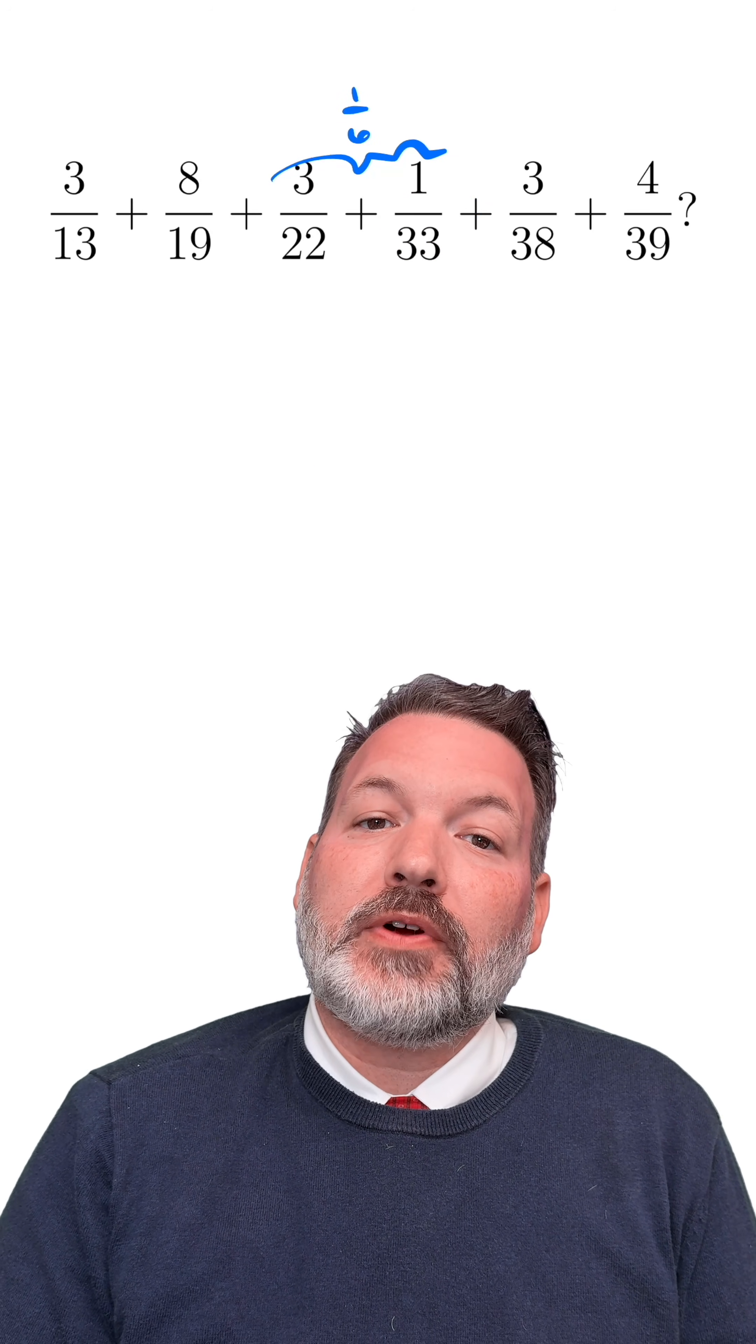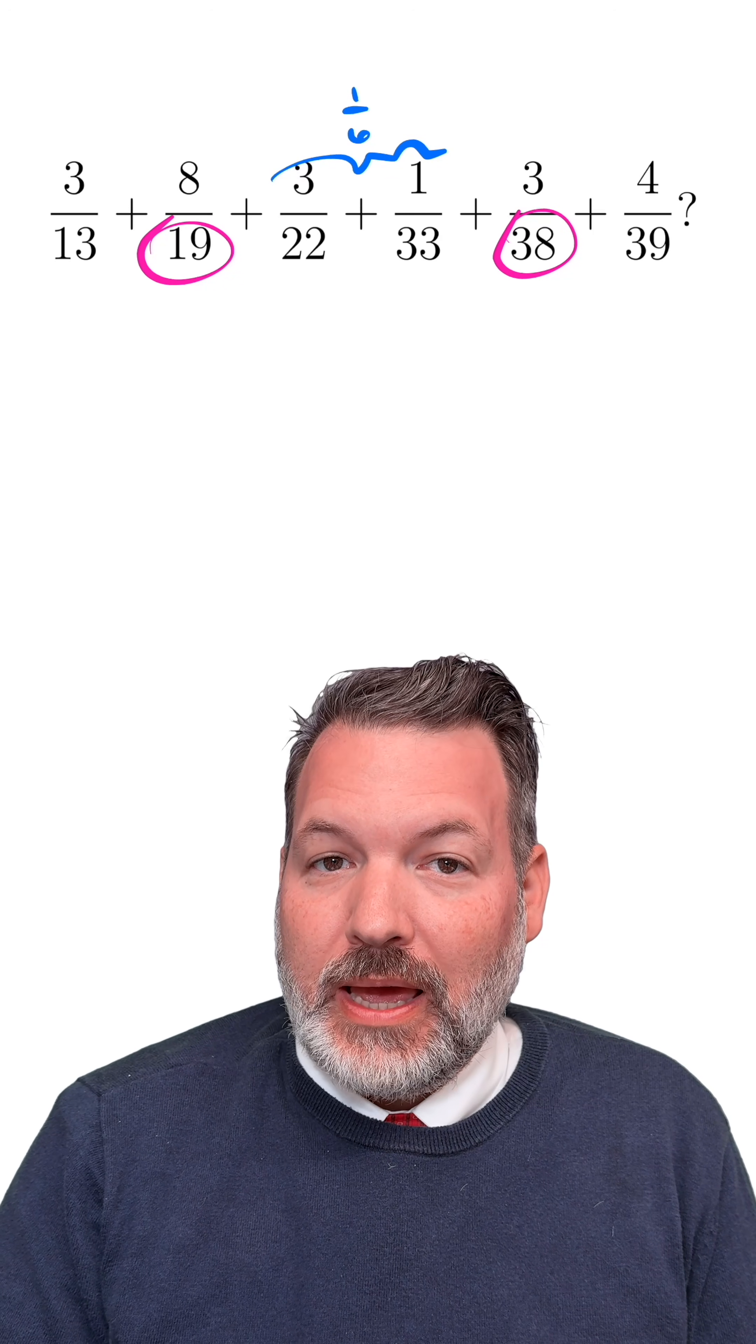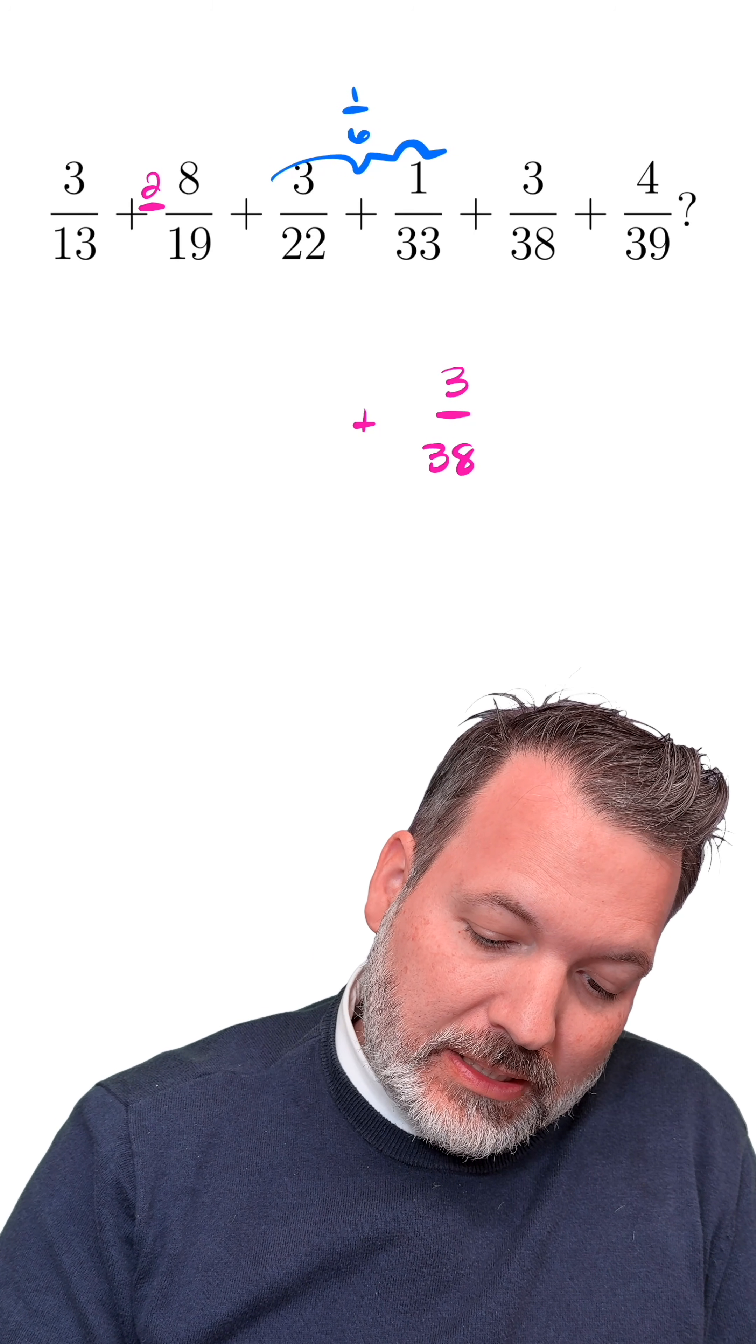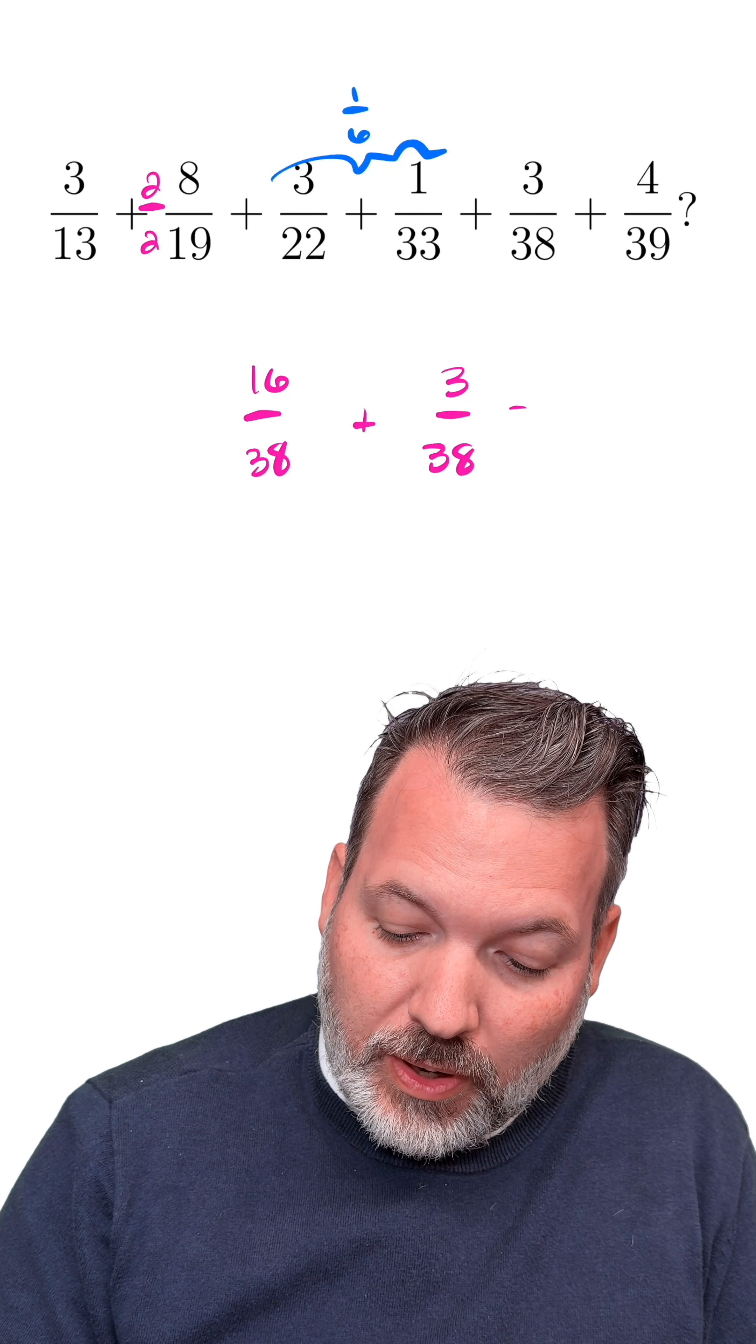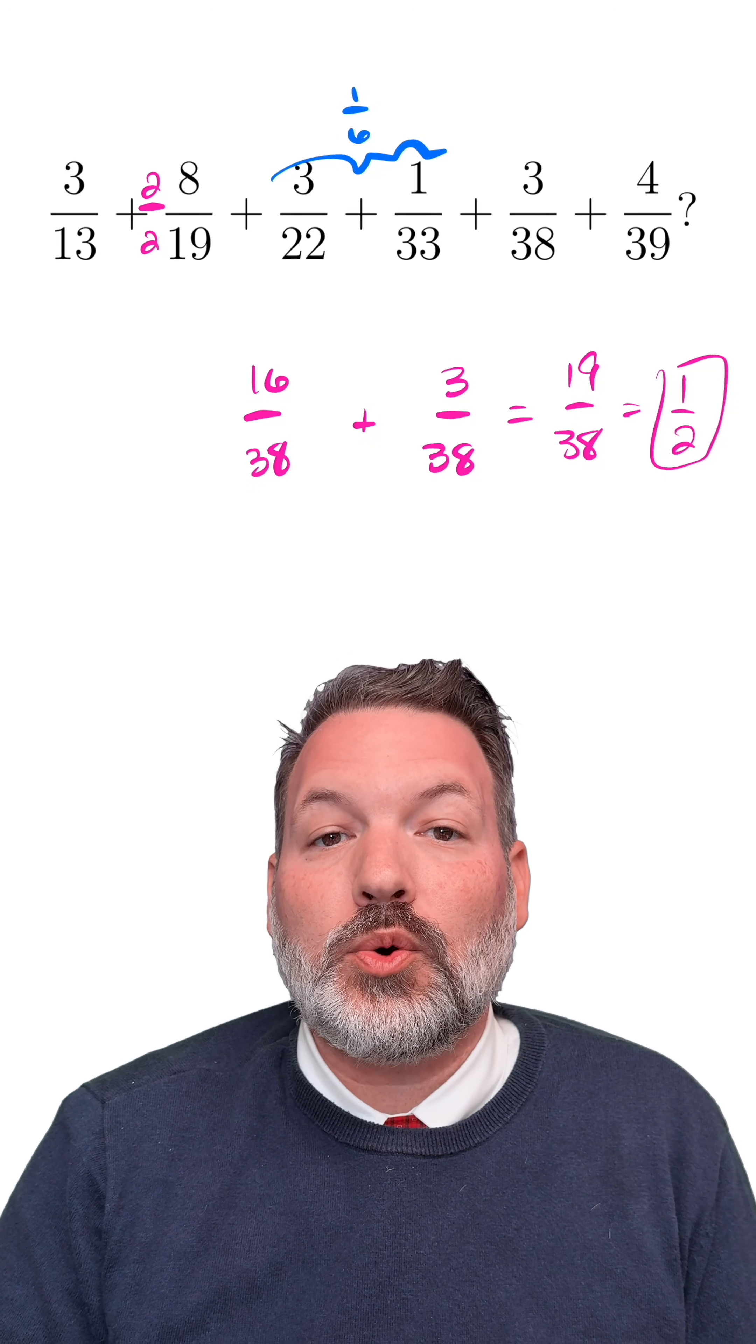I'm going to see if there are other fraction pairs that can combine in a similarly clever way. For example, I notice that 19 is a factor of 38, so I can just use 38 as the common denominator. I'm going to multiply 8/19 by 2/2, giving me 16/38. When I add those two together, I get 19/38, which simplifies to 1/2.